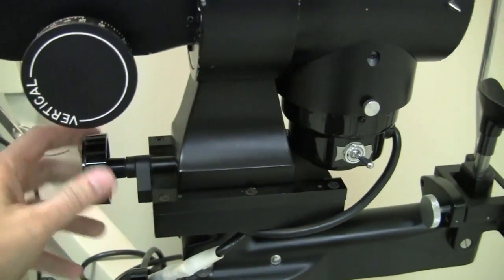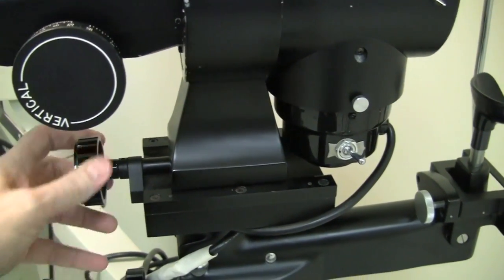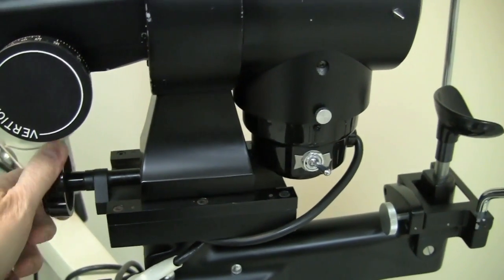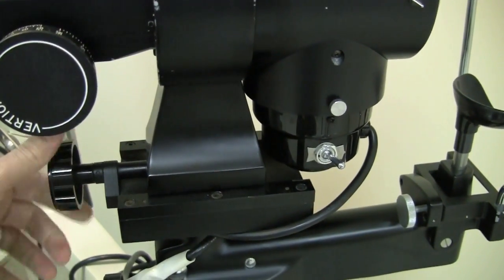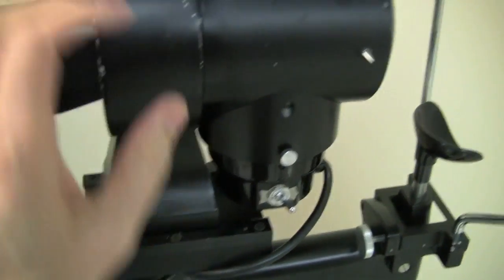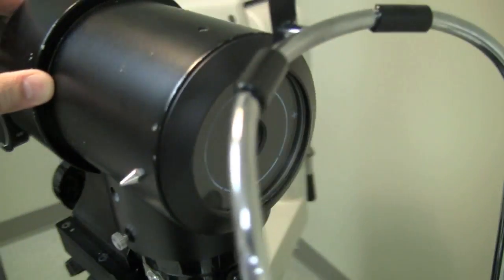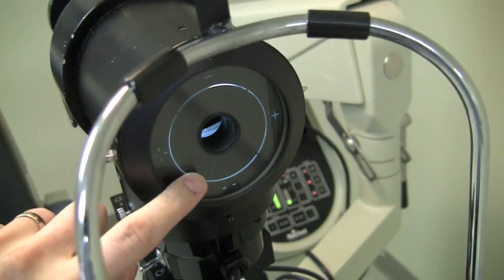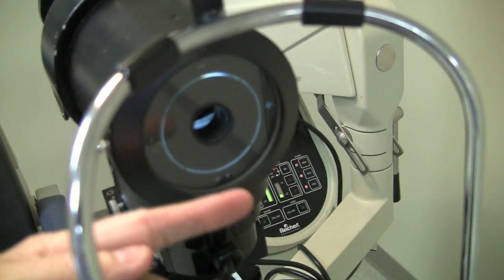This knob is also used to focus the instrument. If you turn the knob, you'll see that the whole thing is moving forward a little bit and then backwards a little bit. And the whole point of doing this is to get this end of the instrument where we have this circle closer to and farther away from the patient's cornea.